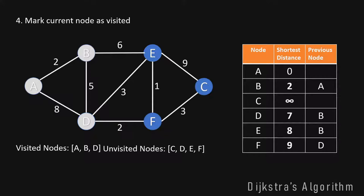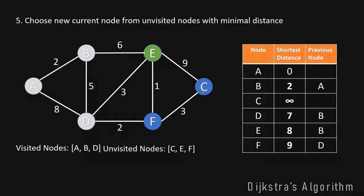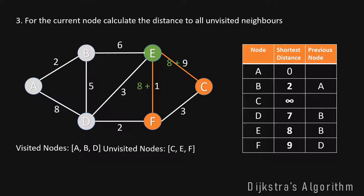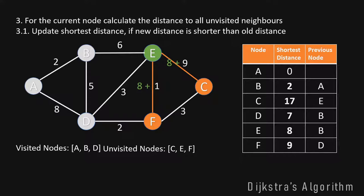We move on to the next node with minimal distance. E has distance 8 and F has distance 9, so we pick E. We calculate distances from E to C and E to F, adding 8 to each edge weight. For C: we get a distance of 17 from A to C over E — less than infinity, so we update C's shortest distance to 17 with previous node E. For F: the new distance is 9, exactly the same as the current value, so we don't update anything. We are finished with node E.